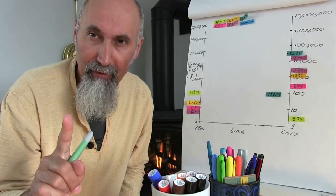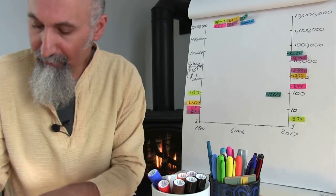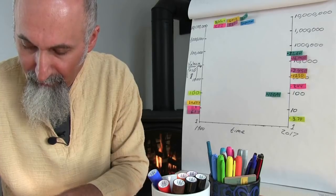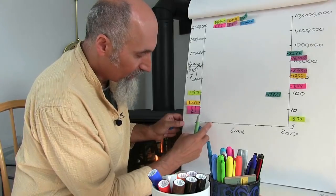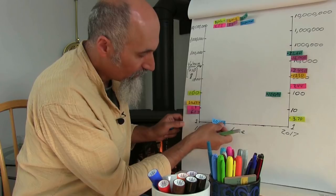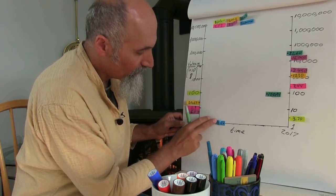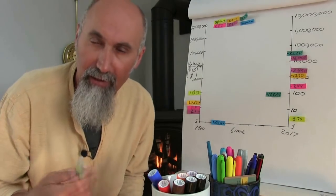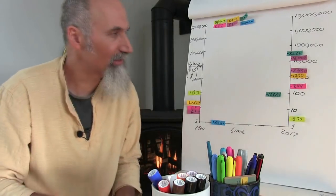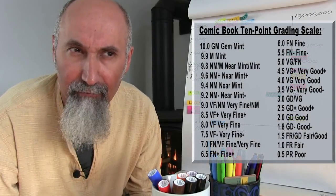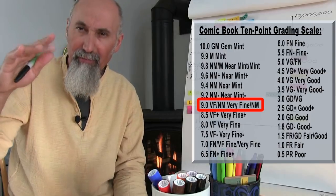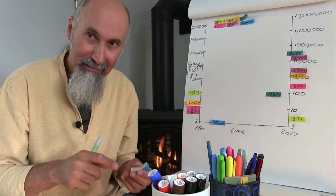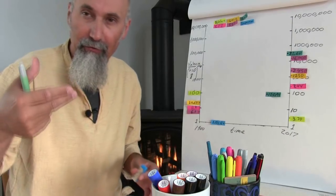Instead of buying one Action Comics number one, let's say we bought 10, making it $1. In 2014 and 2016, Action Comics number one in grade 9.0 (very fine near mint) sold for $3.2 million. So 10 cents, if you bought it and kept it in good shape, would have returned $3.2 million. Ten of them would have gotten you $32 million — if the value kept the same.